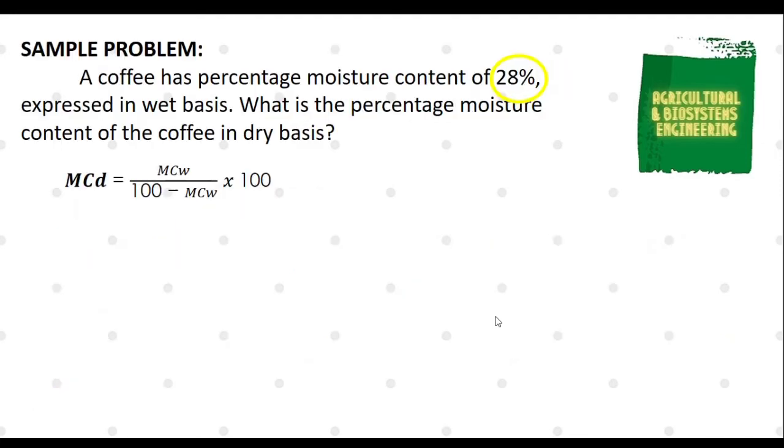The only given in the problem is 28% Moisture Content Wet Basis. With this, we can now solve for its Moisture Content Dry Basis. We simply substitute to the formula. We now have 28 all over 100 minus 28, multiplied to 100. The final answer is 38.89%.